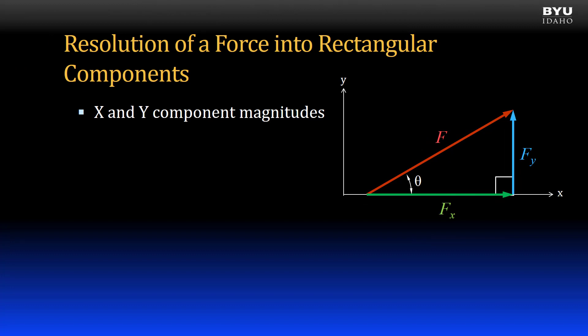To find F sub x, we would multiply the magnitude of F by the cosine of angle theta, since F sub x is adjacent side with respect to that angle. To find F sub y, we would multiply the magnitude of F by the sine of angle theta, because it forms the side opposite of the angle theta. If we already knew the components F sub x and F sub y, then we could find the magnitude of the resultant using the Pythagorean theorem.